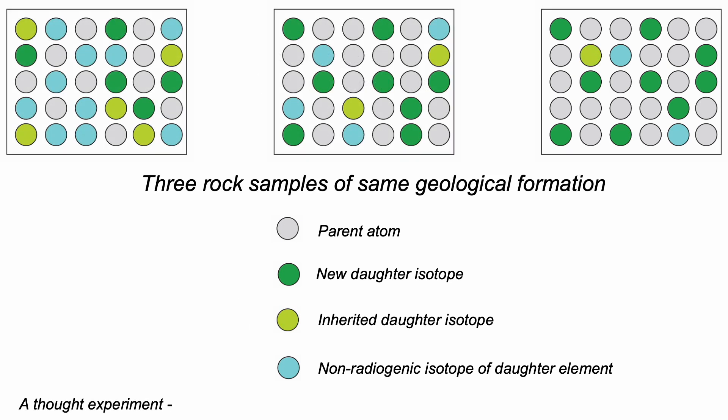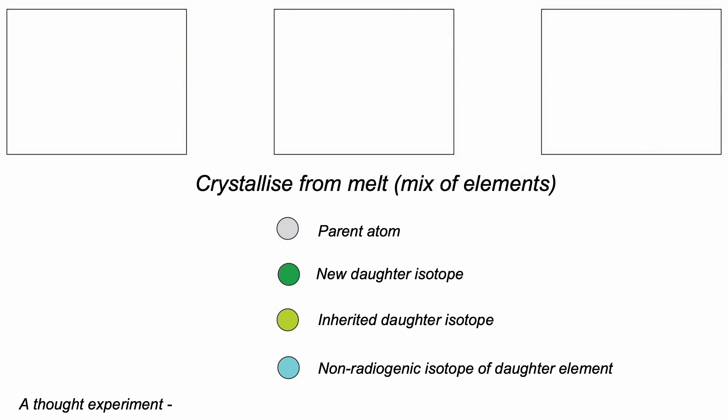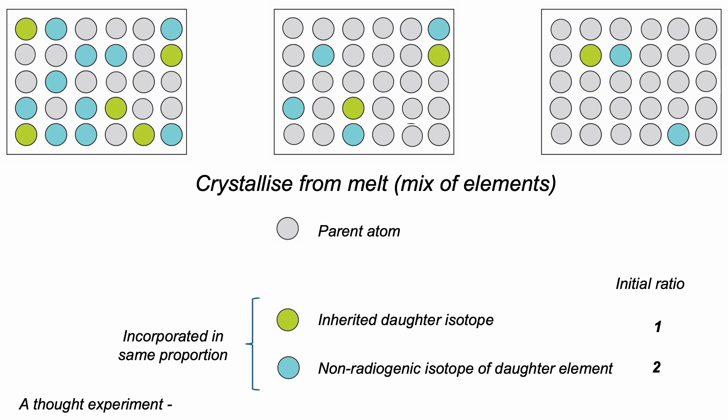Let's explore this with three samples we've collected from the same geological formation, say, a granite. The idea is that this formation crystallised from a melt with a mixture of atoms: parents, and an initial mixture of the daughter element, some of the radiogenic isotope, and some of the non-radiogenic isotope. And that the two isotopes, radiogenic and non-radiogenic, of the daughter element, behave the same chemically, so are incorporated into components of the final geological formation in the same proportions. This is termed the initial ratio.